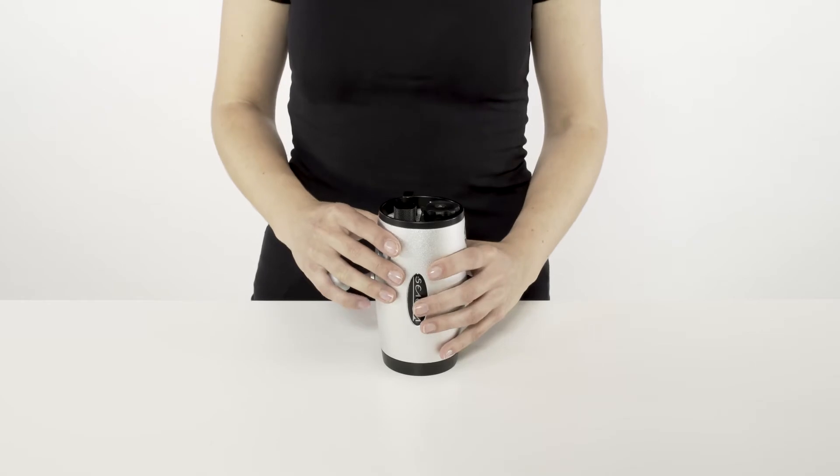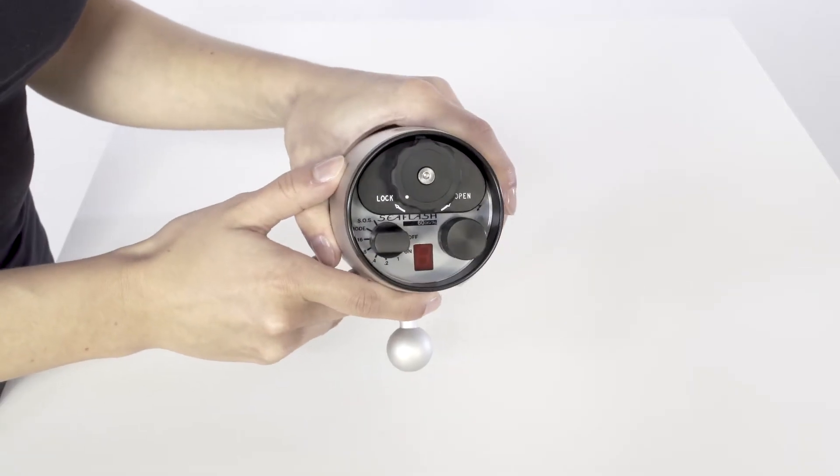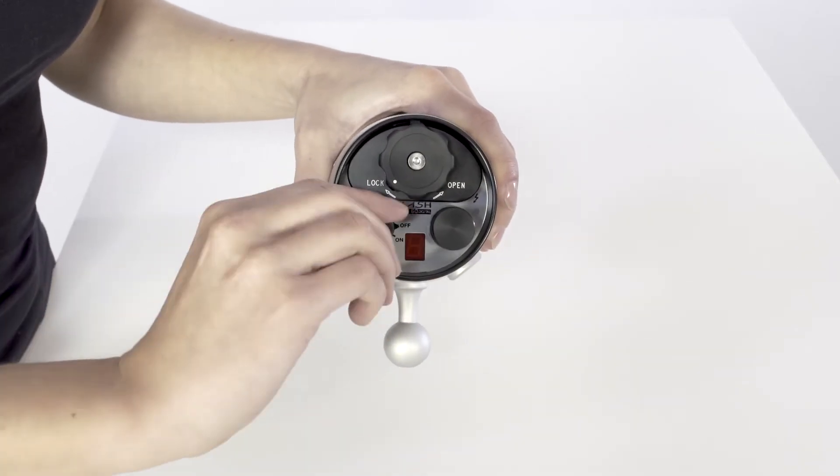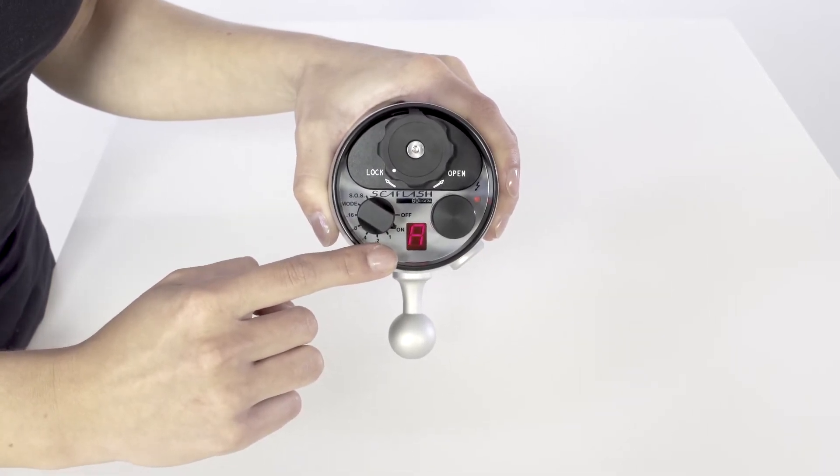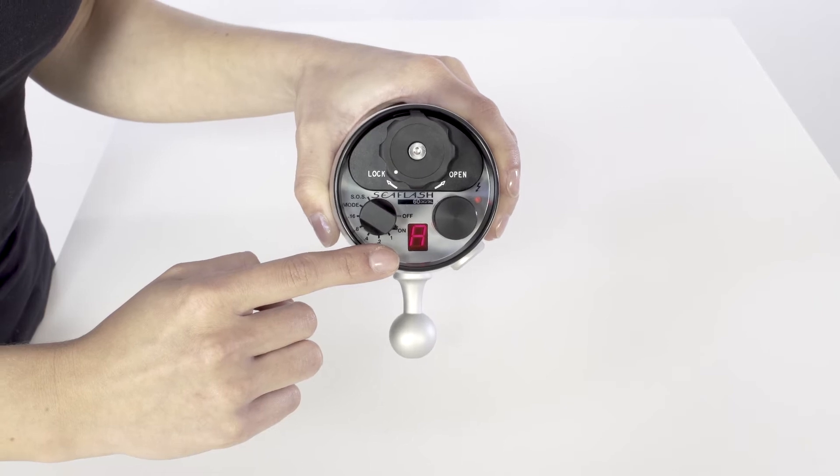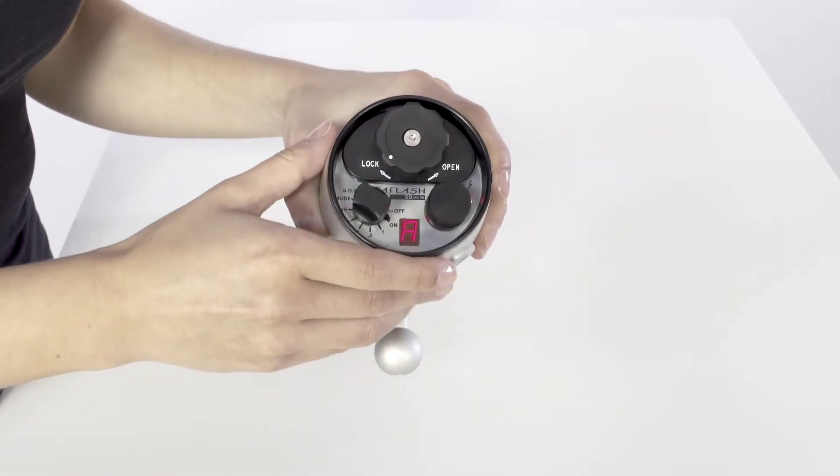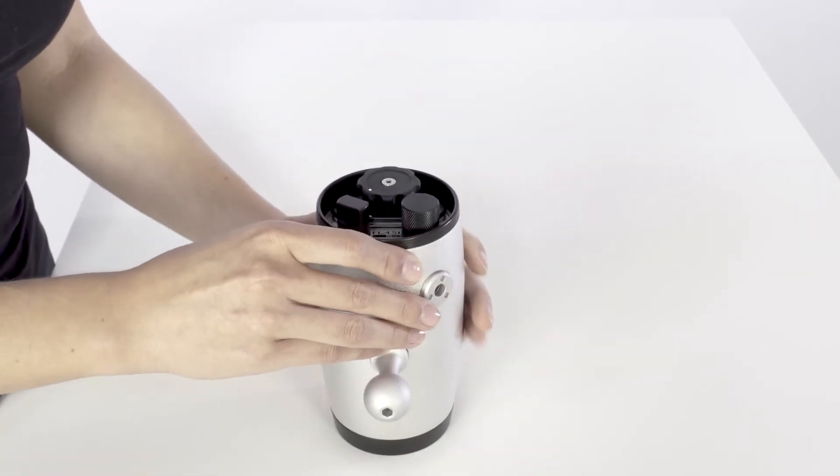It is easy to check the camera compatibility of the flash. As soon as you switch on your device, the display will show the firmware release. If there is a dot after the number, the flash is prepared for a Canon camera. If this dot is missing, the electronics is ready for Nikon.